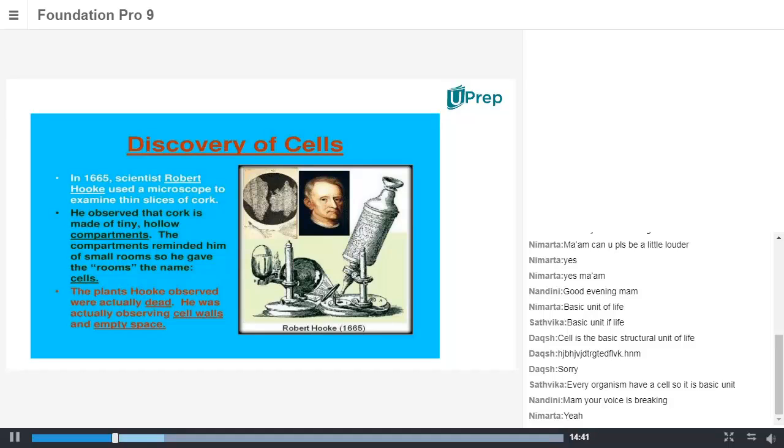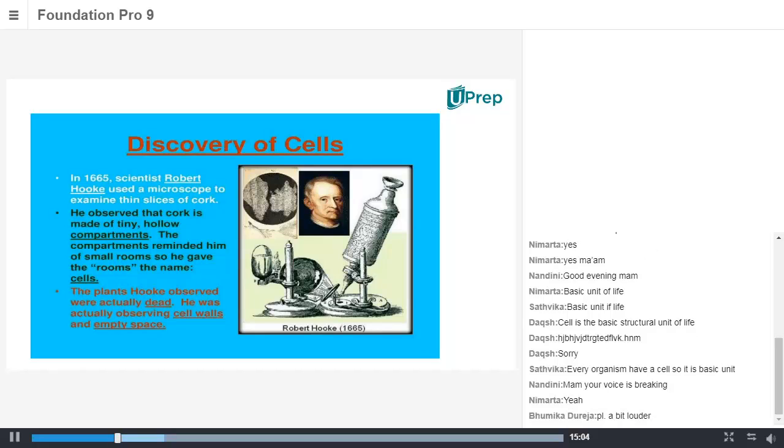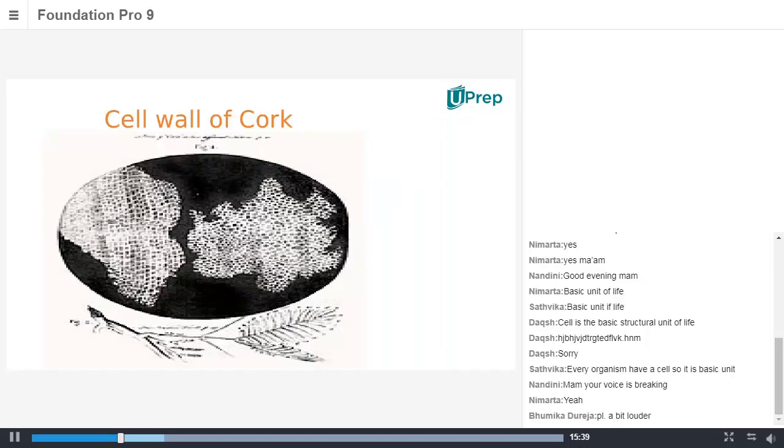Right now we call it as a microscope. So using that, he used to observe the different sections of the wood or the cork metal he used to provide for his architecture profession purpose. In the past 16th century, suddenly on one good fortunate day, he observed a kind of...